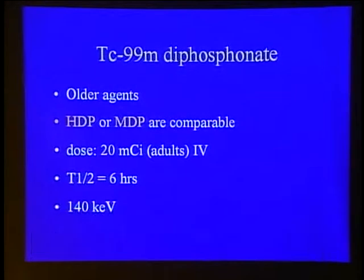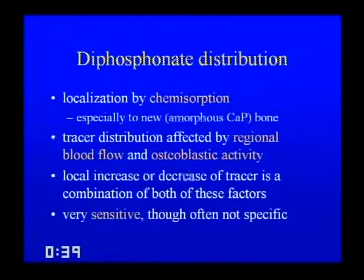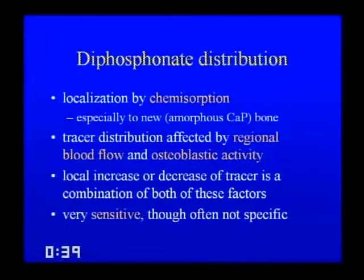Historically, bone scan agents have included gallium and pyrophosphates, but in the modern era the diphosphonates — HDP or MDP — are standard, with an adult dose of approximately 20 millicuries of Technetium-99m. Key characteristics are a six-hour half-life and 140 keV photopeak. The mechanism of localization is chemi-adsorption. The radiotracer is avid for calcium phosphate matrix, which is abundant in new bone formation, but can also accumulate in soft tissues.